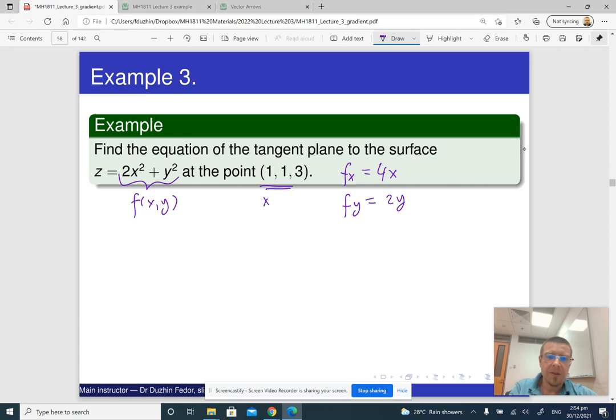So 4x is really 4 times 1 is 4. And this is 2 times 1 is 2. All right, so this is f_x and f_y evaluated at the given point. And so this is ∇f at the given point.